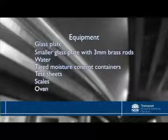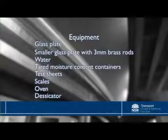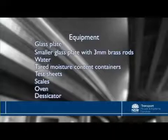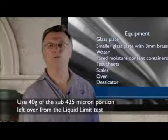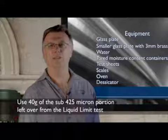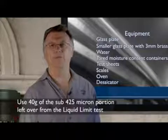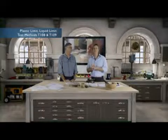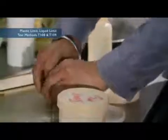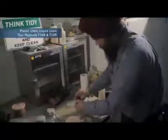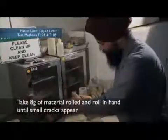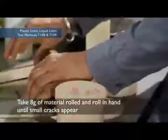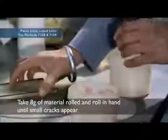Again, the same sub-425 micron portion as the liquid limit test. We'll need at least 40 grams, which comes out of the leftover from the liquid limit test. Our sample has been mixed into a paste and allowed to cure. After remixing, we're looking for a moisture content where the material can easily be rolled into a ball. We take 8 grams of material and knead and roll it in our hands. When small cracks appear on the outside of the ball, it's time to determine if the material has reached its plastic limit.